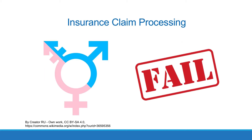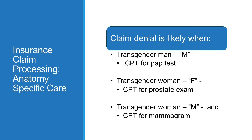Where a transgender person is concerned, normal treatments often cause the bill to fail the automated test. For example: a transgender man has an M on file and the bill includes a CPT for a pap test; a transgender woman has an F on file and the bill includes a CPT for a prostate exam; a transgender woman has an M on file and the bill includes a CPT for a mammogram. In each of these cases, the insurer is likely to issue a claim denial.